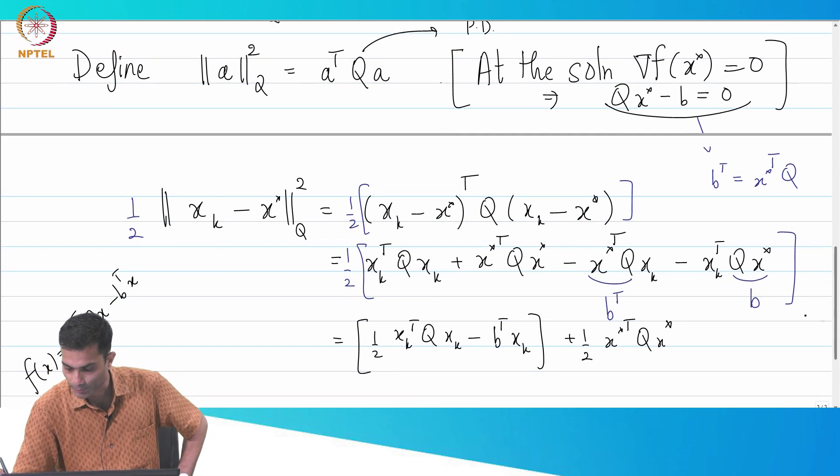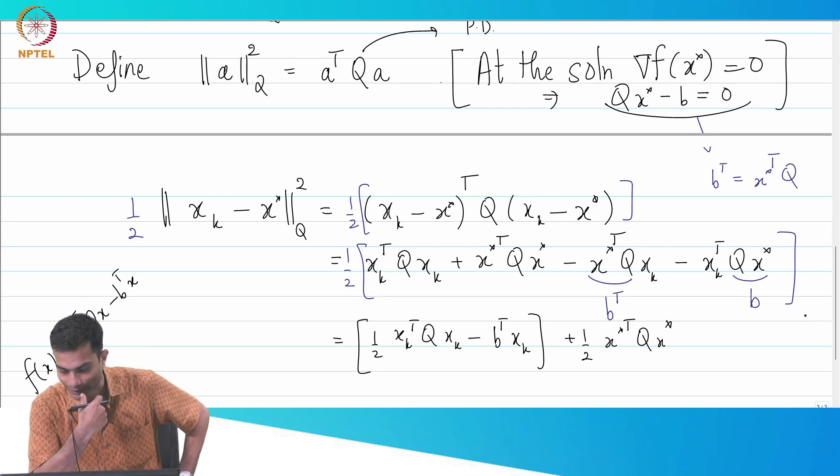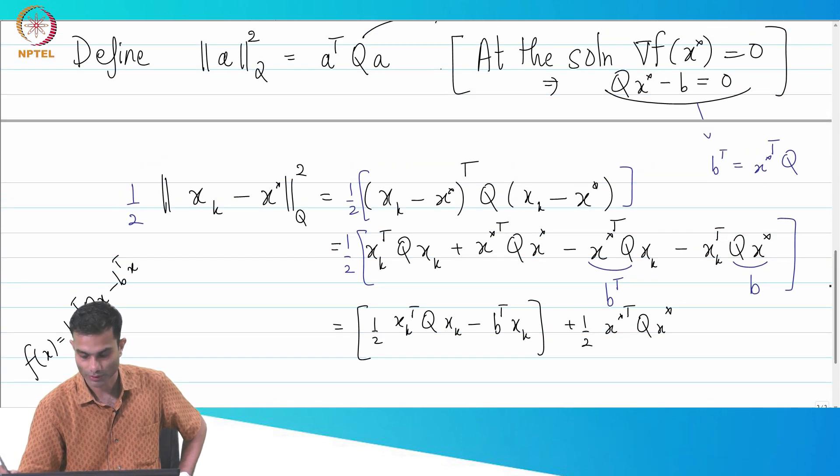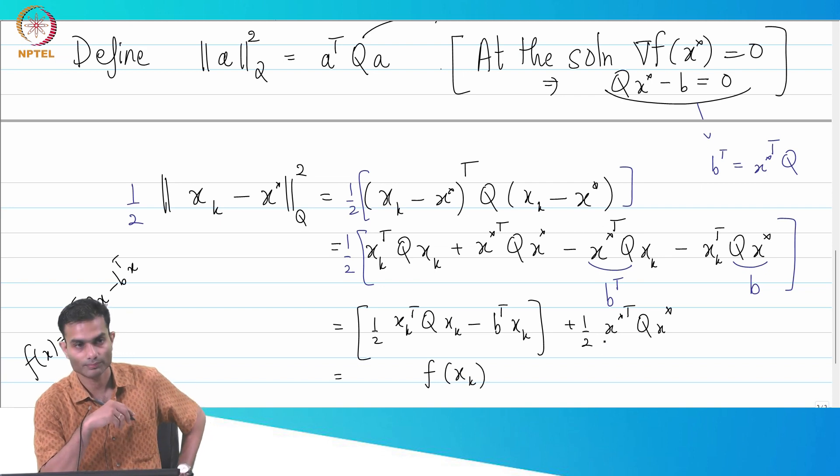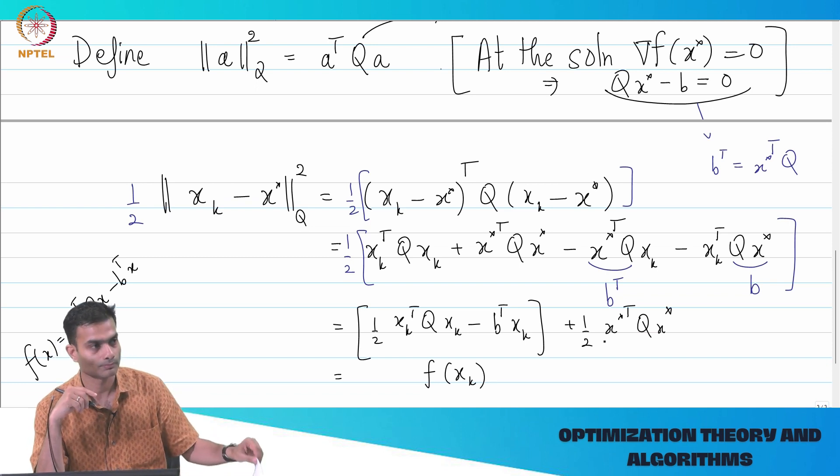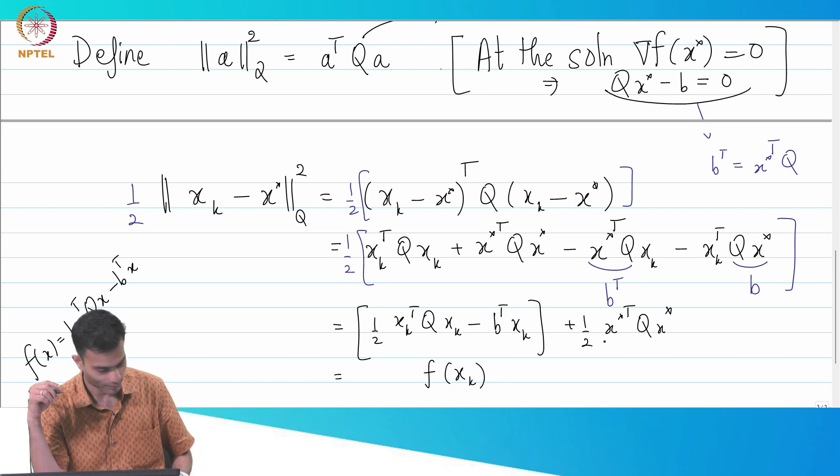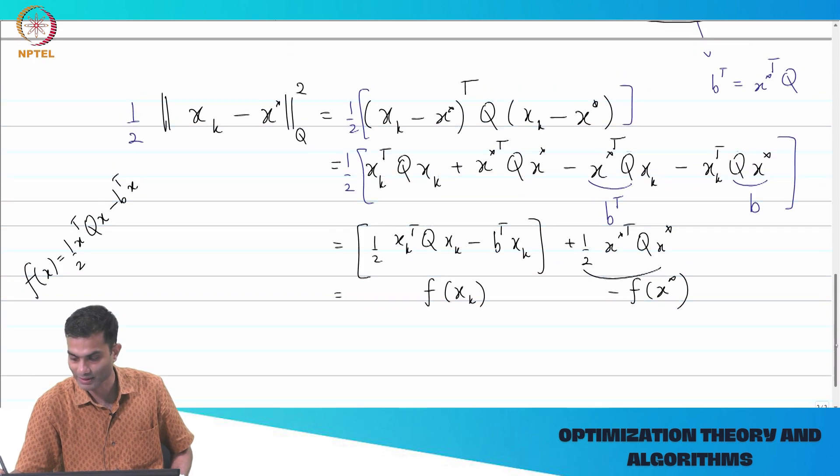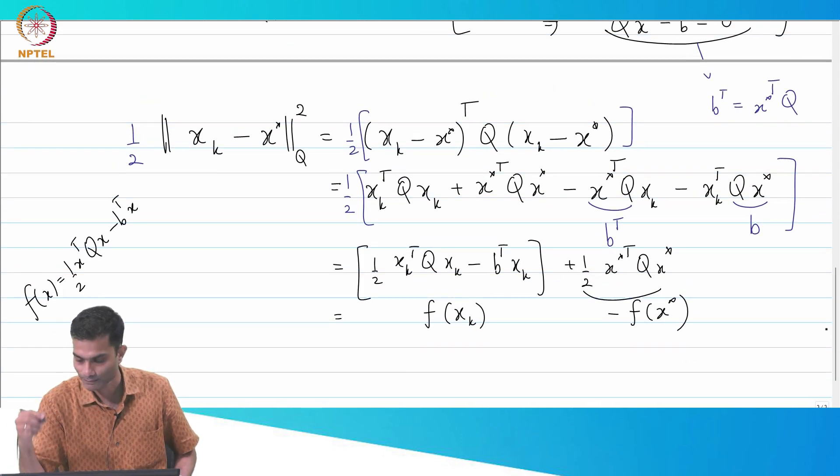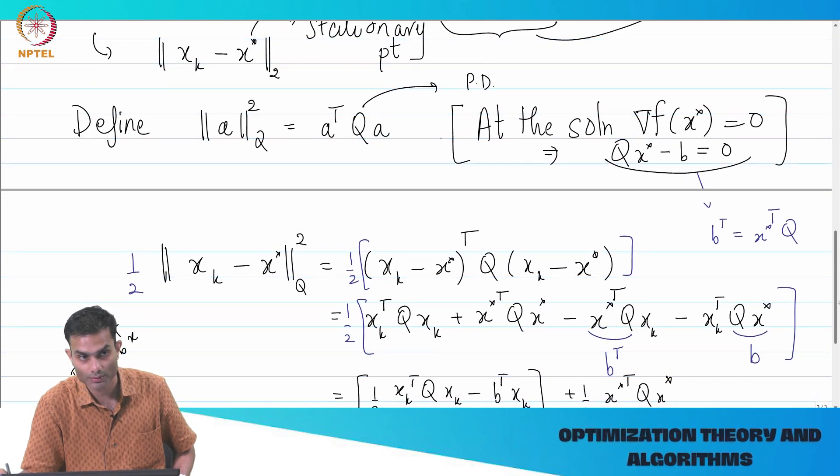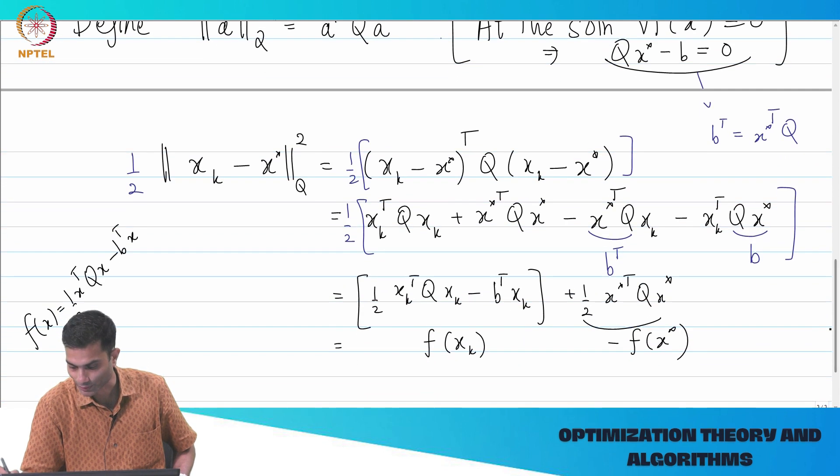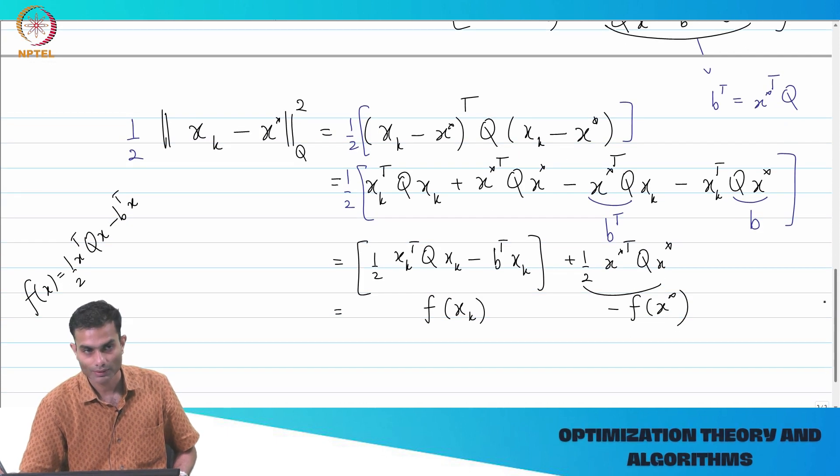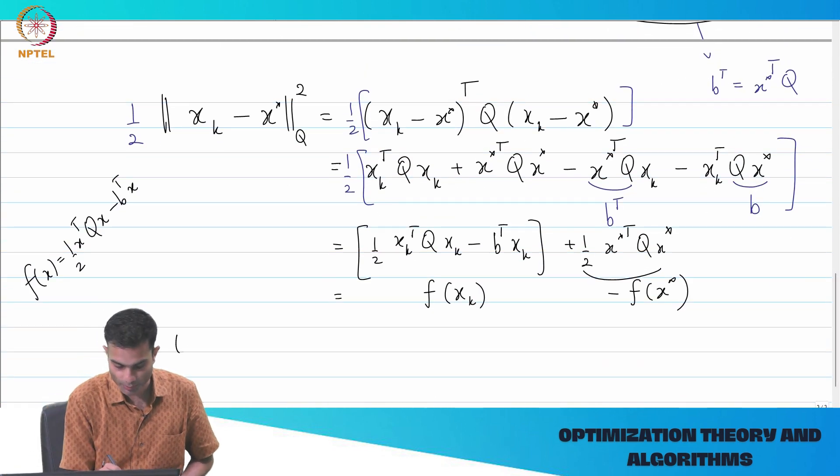Now, can I make somehow, can I introduce, can I write this in terms of f of x star by some algebra, by some clever trick. Is it possible? Yeah. So, this is clearly f of x_k, right. What about this term? This term is minus f of x star. Why is that? I mean, it is correct, but does everyone follow what has happened over here? How this became minus f of x star. So, let's try to write it out a little bit more explicitly.